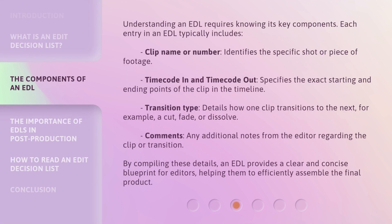Understanding an EDL requires knowing its key components. Each entry in an EDL typically includes a clip name or number, which identifies the specific shot or piece of footage; timecode in and timecode out, which specifies the exact starting and ending points of the clip in the timeline; transition type, which details how one clip transitions to the next — for example, a cut, fade, or dissolve; and comments, any additional notes from the editor regarding the clip or transition. By compiling these details, an EDL provides a clear and concise blueprint for editors, helping them to efficiently assemble the final product.